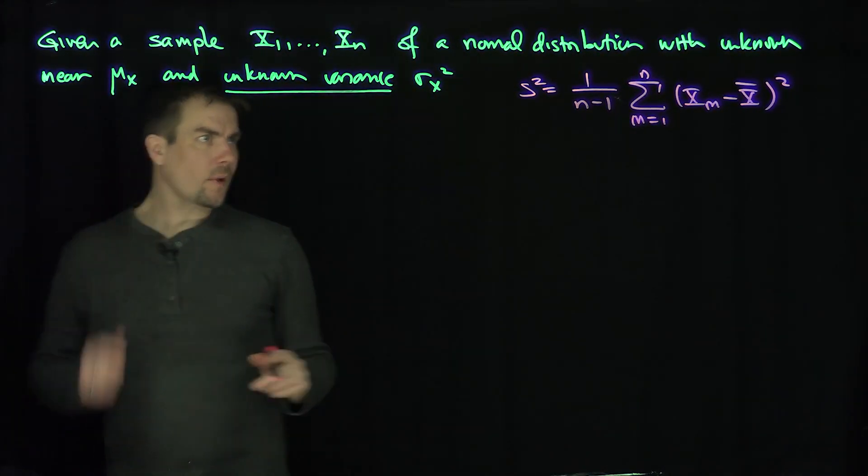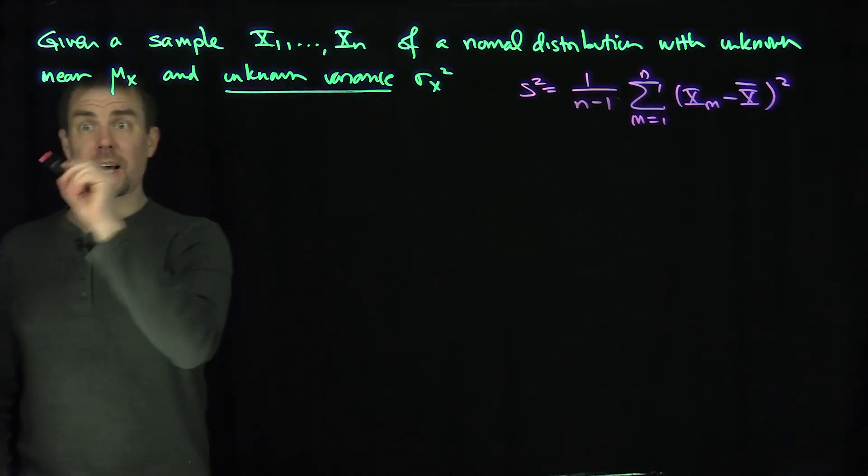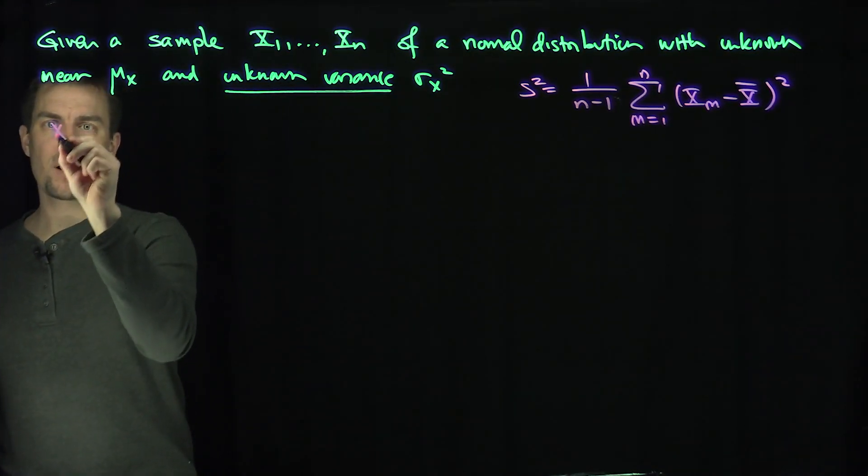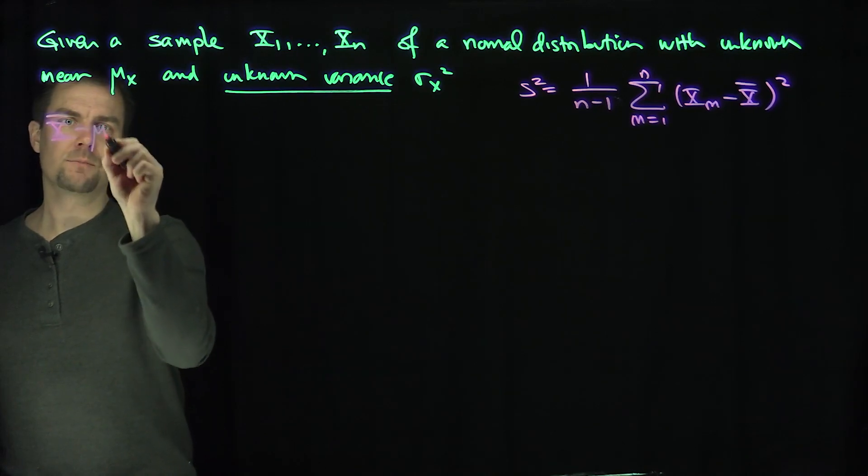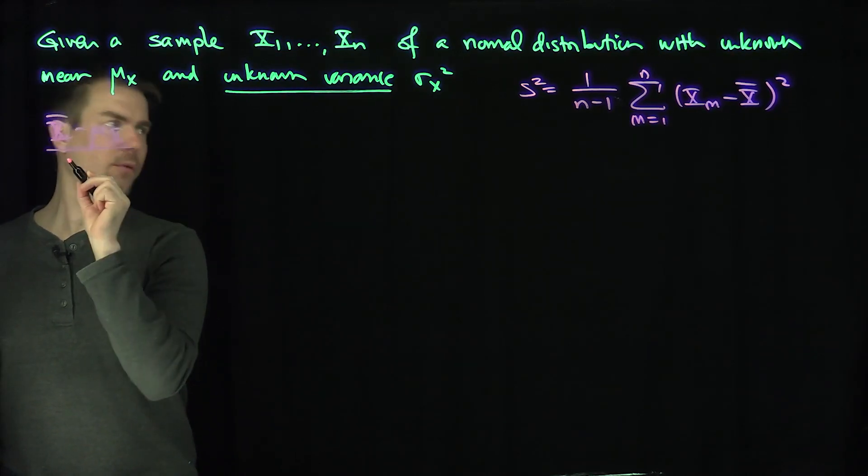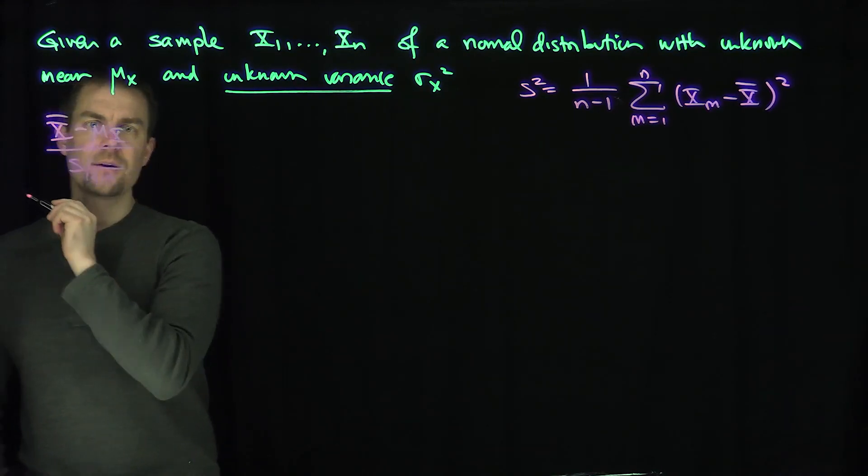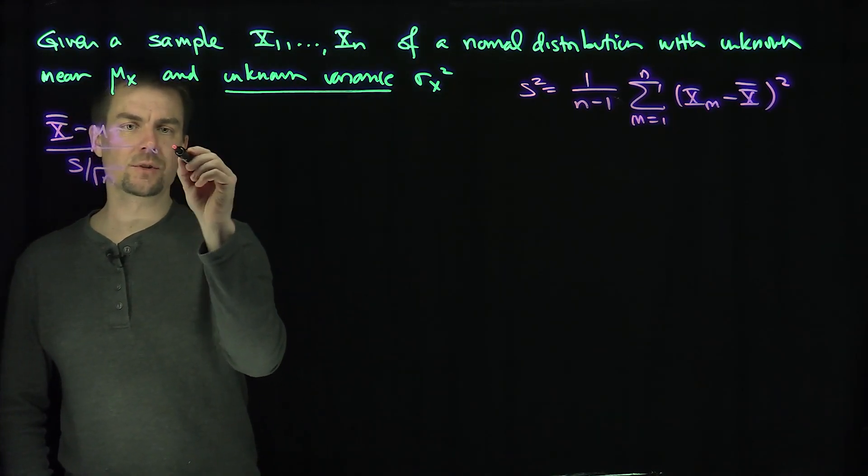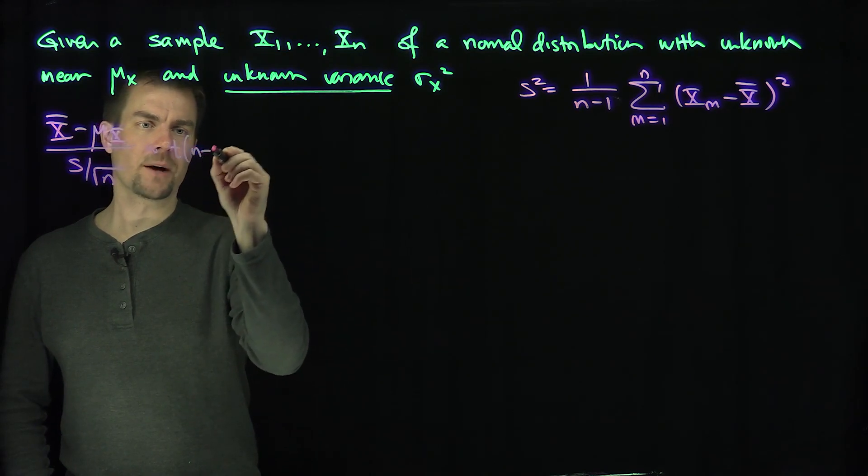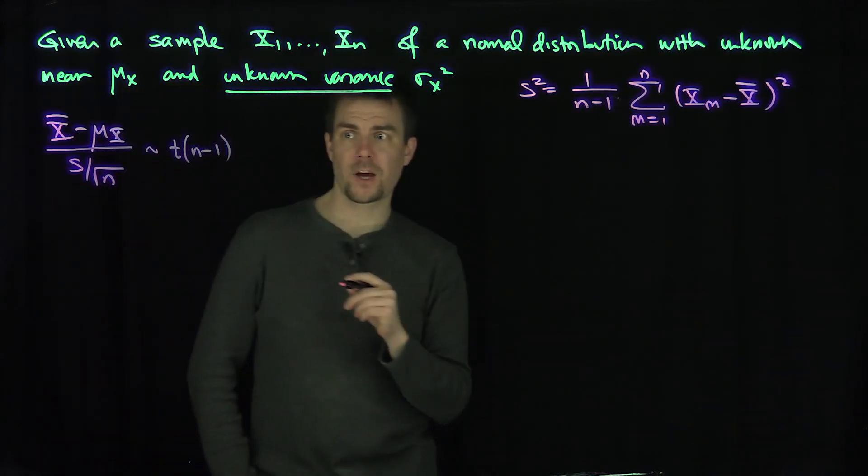Alright, and so now, if I consider the test statistic, the statistic x bar minus mu x over s square root of n has a t-distribution. So this has a t-distribution with n minus 1 degrees of freedom.